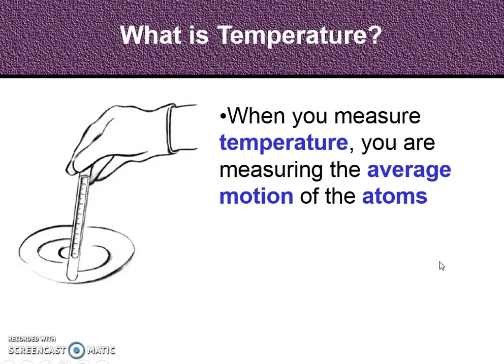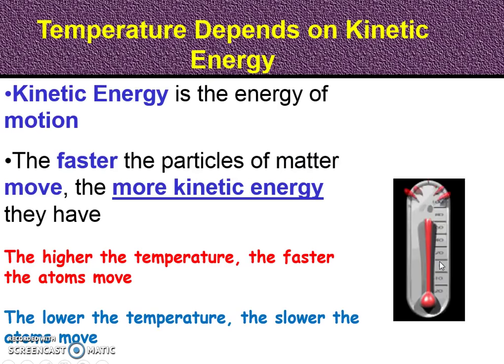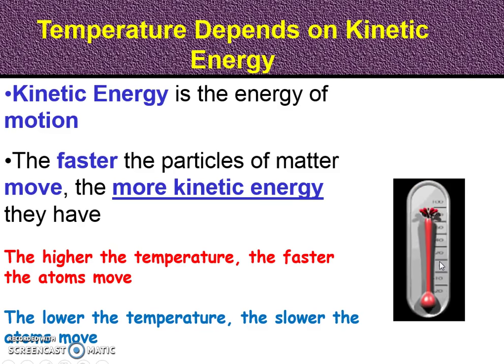When you measure temperature, you are measuring the average motion of the atoms — how fast those particles are actually moving back and forth. Temperature depends on kinetic energy, and kinetic means motion. Kinetic energy is the energy of motion. The faster the particles of matter move, the more kinetic energy you're going to have. So, the higher the temperature, the faster the atoms move; the lower the temperature, the slower the atoms move.